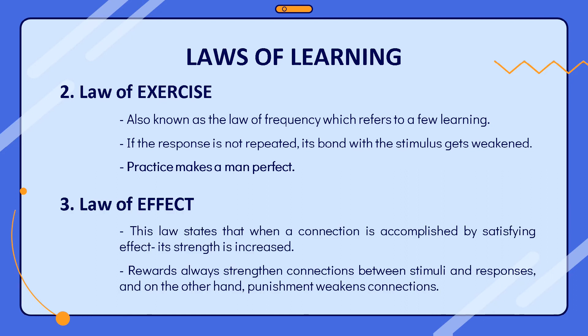The law of effect states that when a connection is accomplished by a satisfying effect, its strength is increased — the probability of its occurrence is greater. In his experiment, if the hungry cat succeeded in opening the door, it would get its food, which had a positive effect on its response. Rewards always strengthen connections between stimuli and responses, while punishment weakens connections.